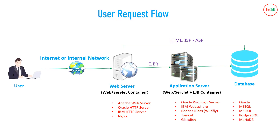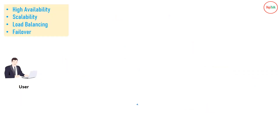This is the basic flow when a user accesses an application and how it is handled in the backend. Examples of web servers include Apache HTTP Server, IBM HTTP Server, and others. When we talk about the top three application servers, they are WebLogic Server from Oracle, IBM WebSphere, and Red Hat JBoss EAP — the enterprise property version of the open source JBoss server. The backend database could be Oracle, MySQL, MSSQL, PostgreSQL, MariaDB, and many more.